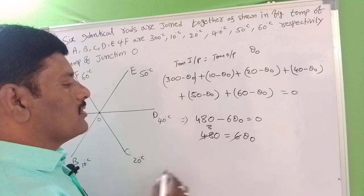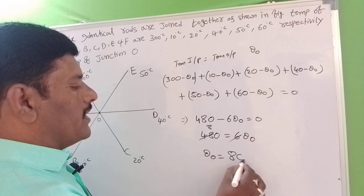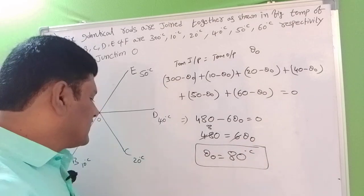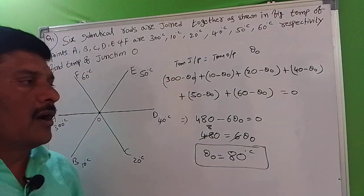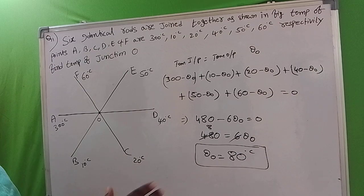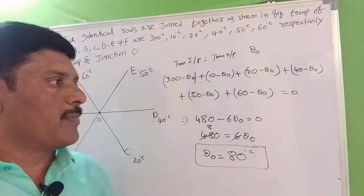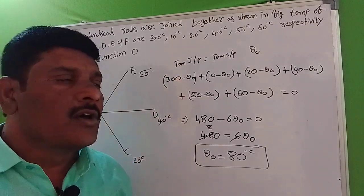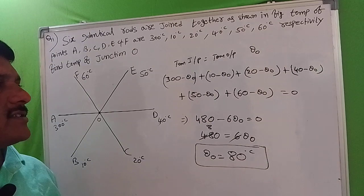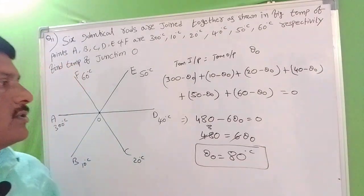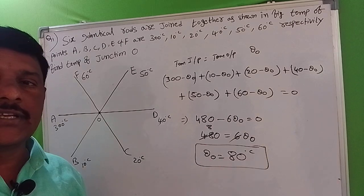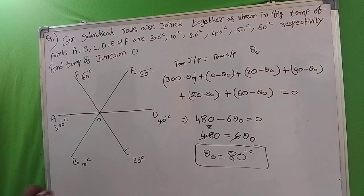Solving, θ₀ = 480 ÷ 6 = 80. Therefore the temperature at the center junction O is θ₀ = 80°C. Let's check the next problem.